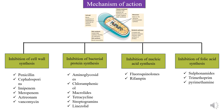The four groups are: cell wall synthesis inhibitors, inhibitors of membrane function, inhibitors of protein synthesis, and inhibitors of nucleic acid and folic acid synthesis. Penicillin, cephalosporins, imipenem, and vancomycin are cell wall synthesis inhibitors. Aminoglycosides, chloramphenicol, macrolides, and tetracycline are protein synthesis inhibitors. Fluoroquinolones and rifamycins are nucleic acid synthesis inhibitors, while sulfonamides, trimethoprim, and pyrimethamine are folic acid synthesis inhibitors.